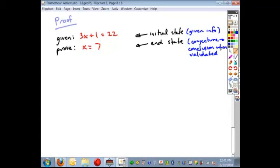And a conjecture will turn into a conclusion when it is validated. And so again, we see here that our end state is x equals 7. If we can confirm this using just a chain of logical arguments, that each one justified by a specific reason that we've already established, then we can make the conclusion that x is indeed equal to 7.